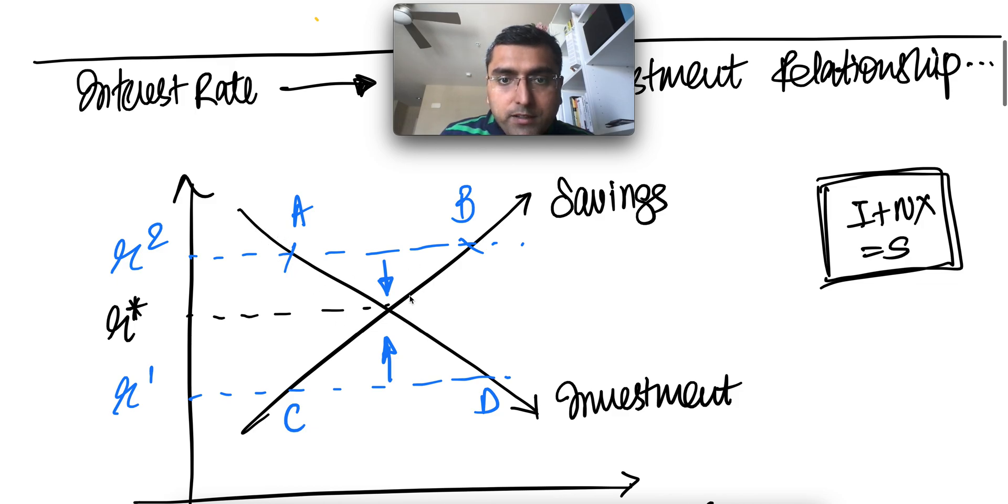As we saw earlier, as savings goes up, interest rate goes up. Investments go down as interest rate goes up. Investments increase as interest rate goes down. More people will buy more homes when it's cheaper. So that's the relationship.